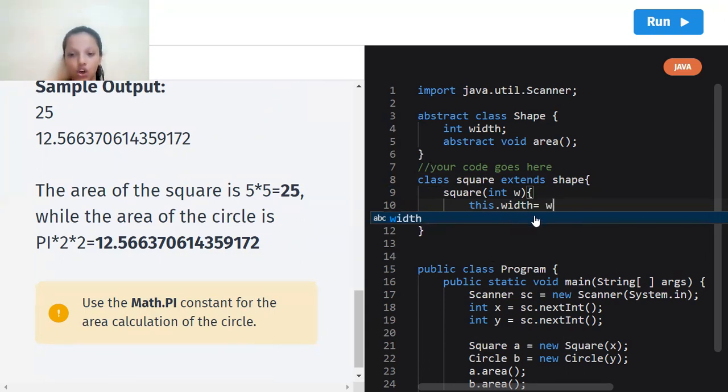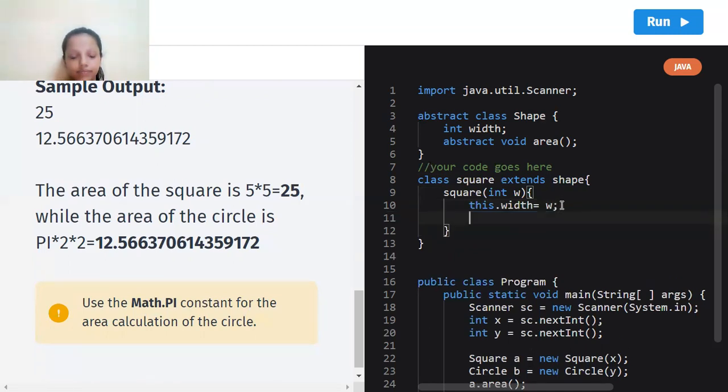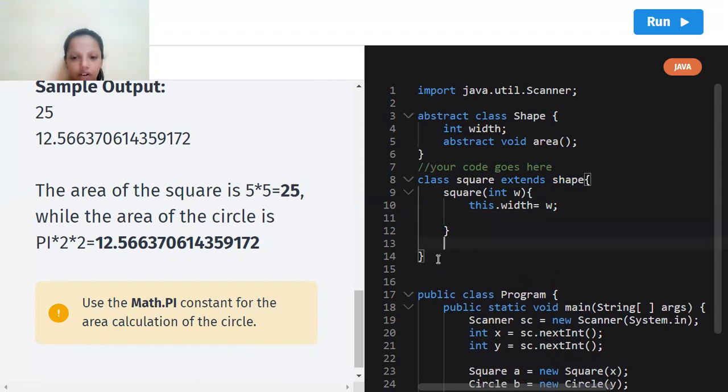Now let's give a semicolon and go further. Now we're going to go down and write the next part. So public void area, which is already given to us over here, which is a void area, but we're going to add public instead of abstract.